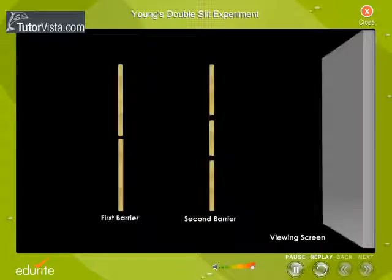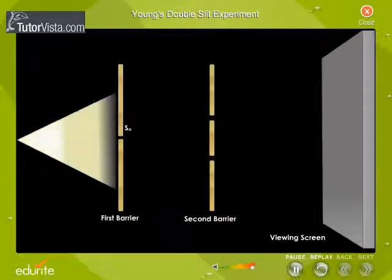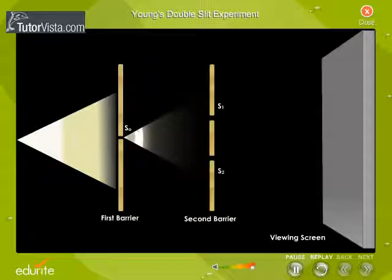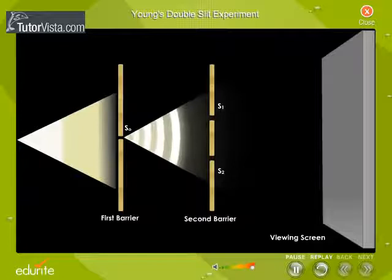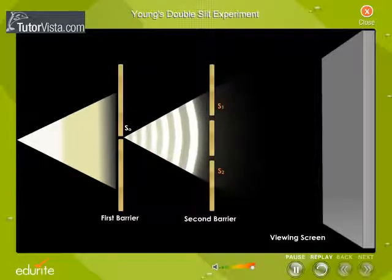A schematic diagram of the experimental setup is shown here. Light was made to pass through a slit S0. The waves emerging from this slit were made to pass through two parallel slits S1 and S2.